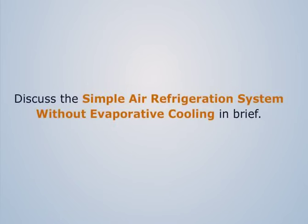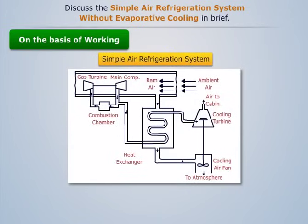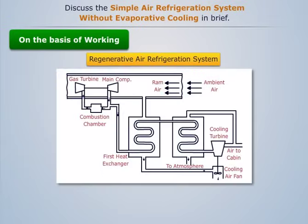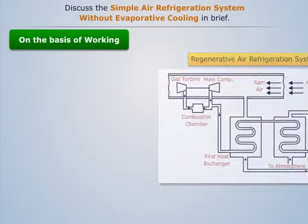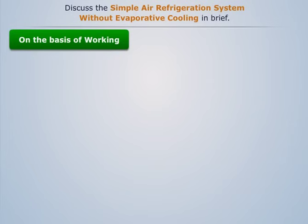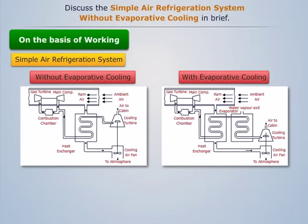We know that on the basis of working, air refrigeration systems are of four types: simple air refrigeration system, bootstrap air refrigeration system, regenerative air refrigeration system, and reduced ambient air refrigeration system. The simple air refrigeration system can be further classified into two parts: without evaporative cooling and with evaporative cooling. Now let's discuss the simple air refrigeration system without evaporative cooling in detail.